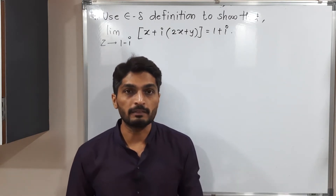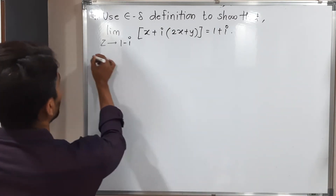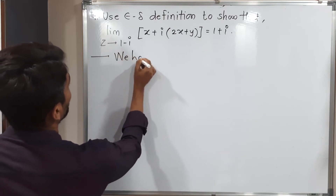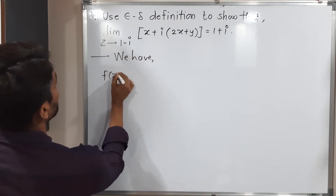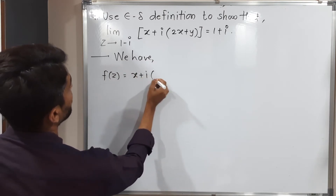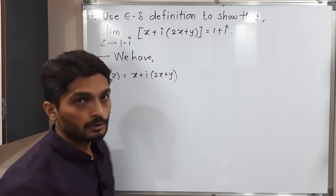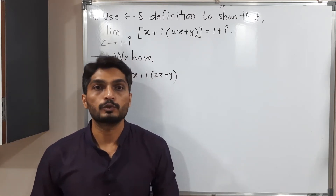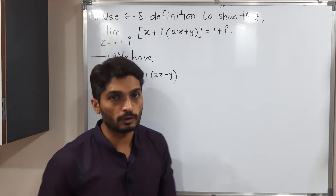So let us write the given function first. We have f of z, which is equal to x plus i times x plus y. Using the epsilon-delta definition, we are going to prove. So first of all, we have to take epsilon. Let epsilon greater than 0 be given.